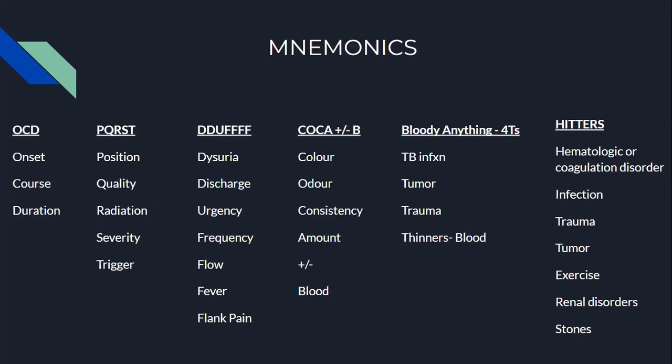Before wrapping up, here are some helpful mnemonics. OCD stands for onset, course, duration. For patients with pain, ask about PQRST: position, quality, radiation, severity, trigger. For patients experiencing urinary problems, ask about DUFF: dysuria, discharge, urgency, frequency, flow, fever, flank pain. For patients with secretions or bodily fluids, ask about COCA plus/minus B: color, odor, consistency, amount, and whether blood is present.